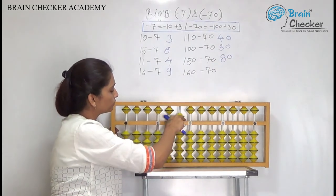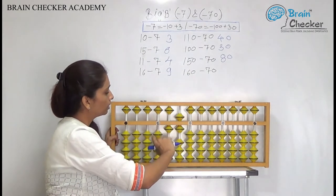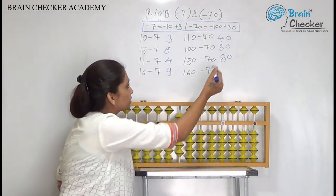And the next is 160. So 160 less 70 add 30 less 100. So the answer is 90.